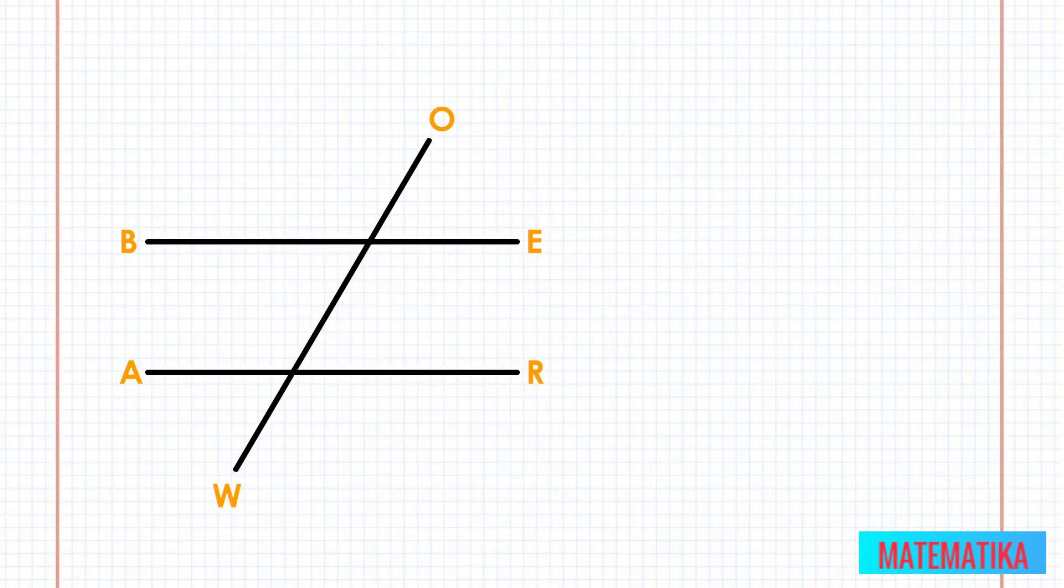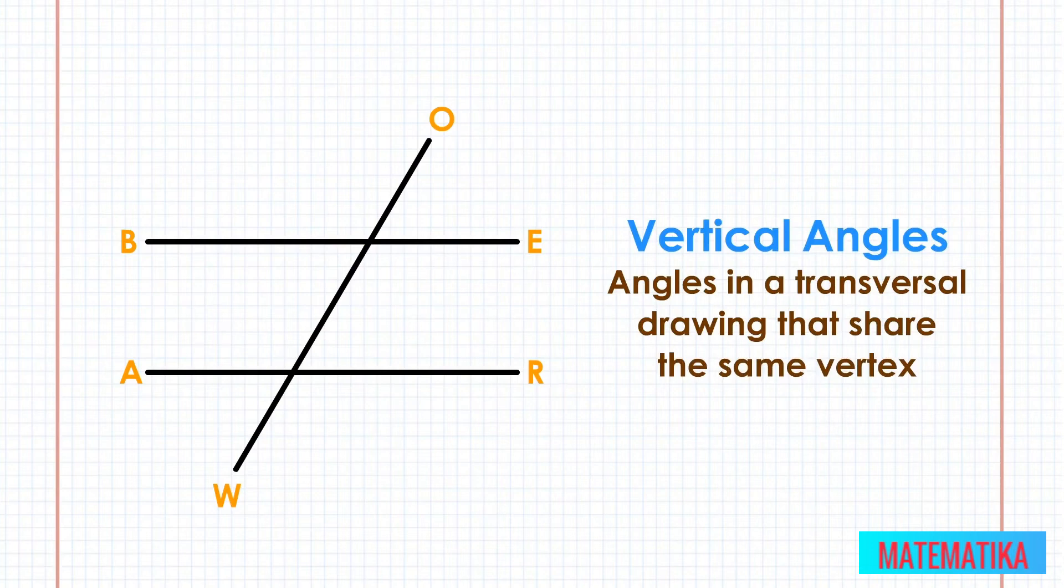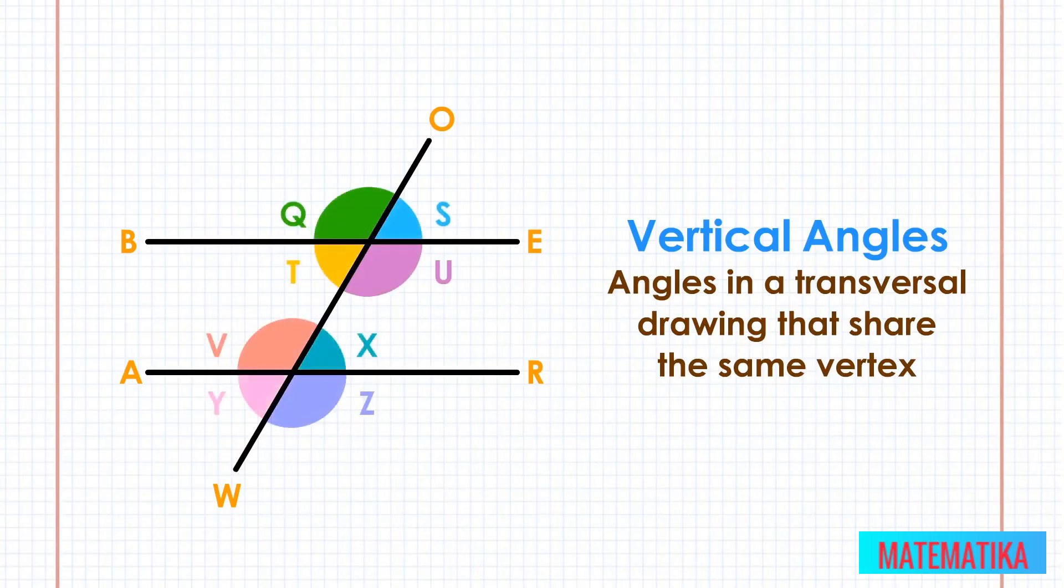Next, let's look at the vertical angles. Angles in your transversal drawing that share the same vertex are called vertical angles. Do not confuse the use of vertical with the idea of straight up and down. You have four pairs of vertical angles.